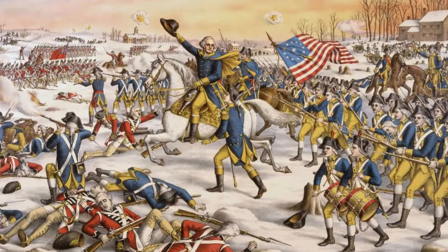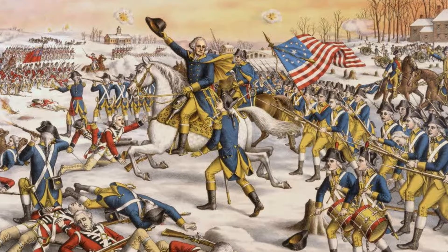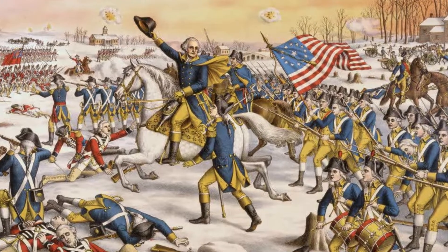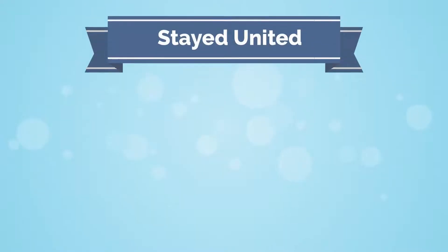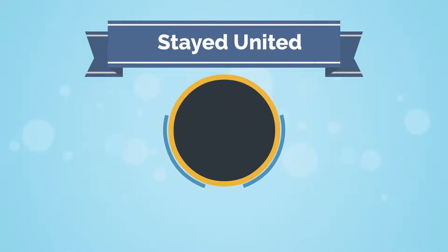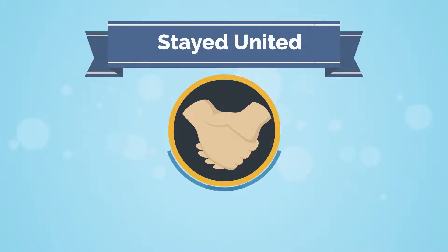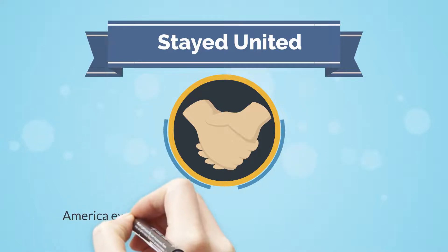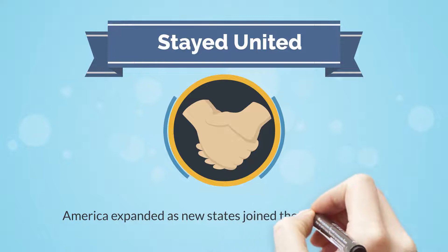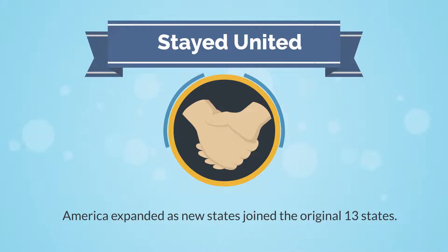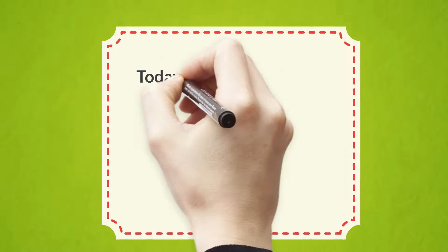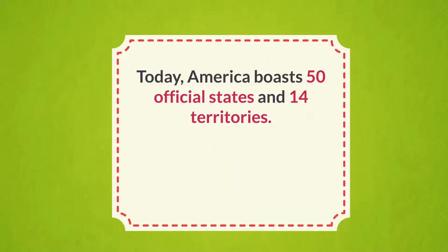After the U.S. Revolutionary War, when the 13 colonies banded together to defeat the British Army and gain their independence, the 13 colonies discovered that they were more similar than different and stayed united and became their own states. As more time passed and new waves of settlers continued America's expansion across the nation, resulting in new states joining the original 13 states. Today, America boasts 50 official states and 14 territories. And who knows, we may be seeing more states to come.